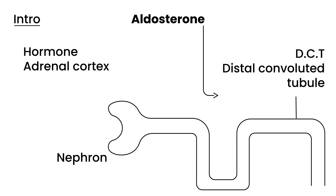What aldosterone does is essentially bring back sodium from the urine into the bloodstream, and it kicks out potassium. And when you bring back sodium, water comes back with it. That's the fundamental action of the hormone aldosterone on the kidney.